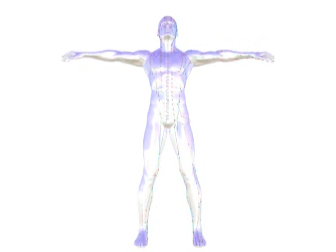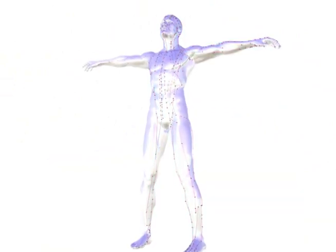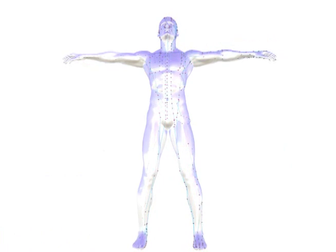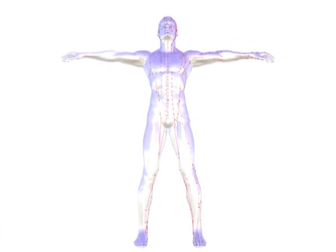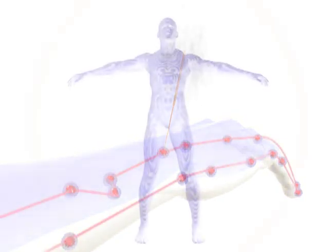Simply put, an acupuncturist will not insert an acupuncture needle randomly into the body. There are certain points in the body along the 14 meridian channels where the metallic acupuncture needle will be inserted. When a metallic acupuncture needle is inserted into the acupuncture points, the body is restored to balance through regulation of the bioenergy.